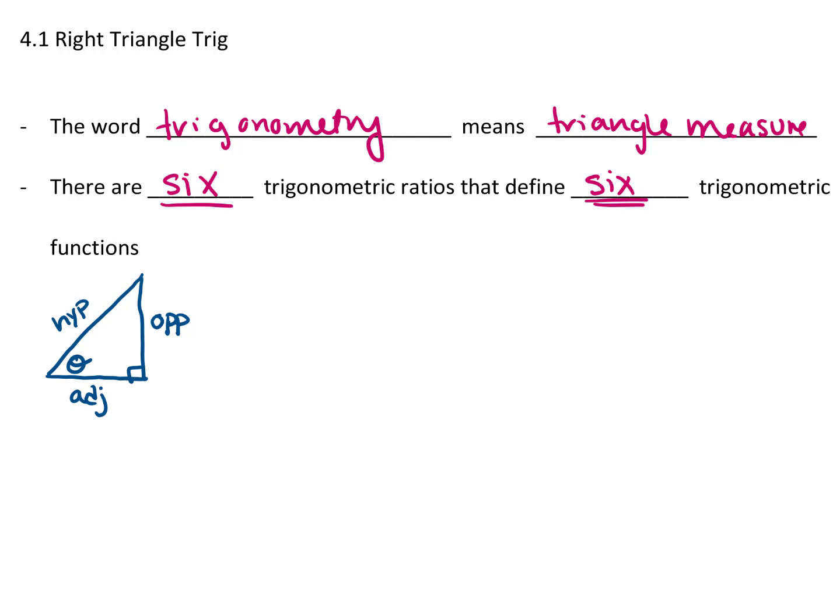The six trig functions: we have sine theta. Sine is a ratio of the opposite over the hypotenuse, so the length of the opposite side of the triangle over the length of the hypotenuse. Cosine is adjacent over hypotenuse, and tangent is opposite over adjacent. These are probably the three trig functions that you're most familiar with.